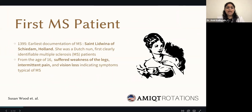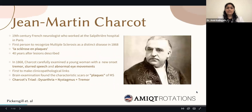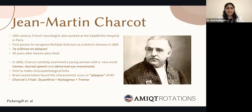When it comes to the history, back in 1395, Lidwina of Holland, a Dutch nun, presented the first clinical symptoms of multiple sclerosis. At age 16, she suffered from weakness of the legs, intermittent pain, and vision loss. It wasn't until 40 years later that French neurologist Jean-Martin Charcot recognized multiple sclerosis as a separate disease entity, terming it 'la sclerose en plaques.' In 1868, he examined a young woman with new onset tremor, slurred speech, and abnormal eye movements. He is also famous for the well-known Charcot triad: dysarthria, nystagmus, and tremor.